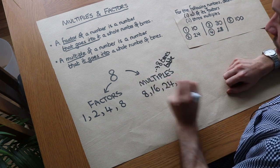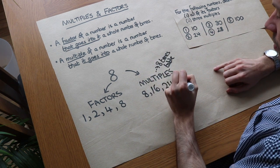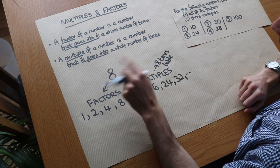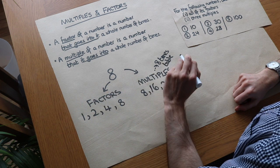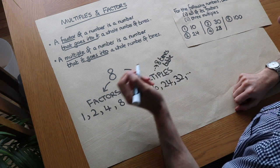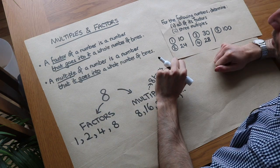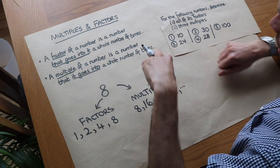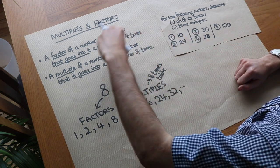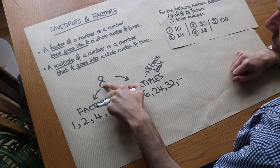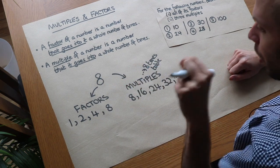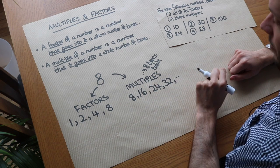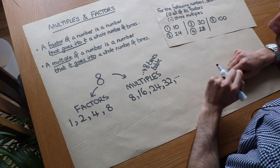So the next number in the 8 times table, 32, is a multiple. There are going to be infinitely many multiples of 8 — we could have 800 or 8,000. The way I remember which way around it goes: if you had multiple friends, that means more than one friend. So think of multiples of 8 as multiple copies of 8 — multiple lots of 8 — and that gives you a multiple of 8.